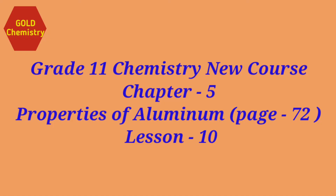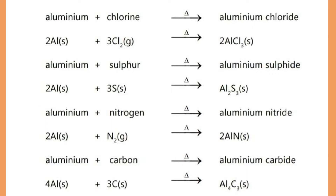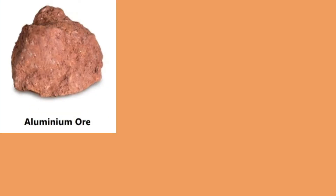Hello everyone, this is grade 11 chemistry theory 3, Chapter 5, page number 72: Properties of Aluminium and Uses of Aluminium.